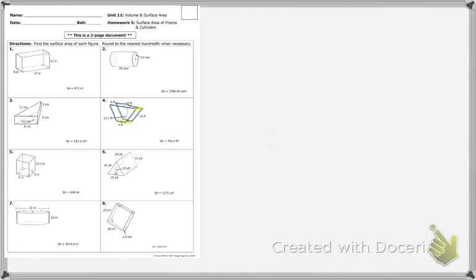Those lines you did not highlight — that number eight, that is your height. For a prism, your formula needs the height of the prism, the perimeter of the base, and you're going to add two times base area. So you need the height, which we just found out, is eight.